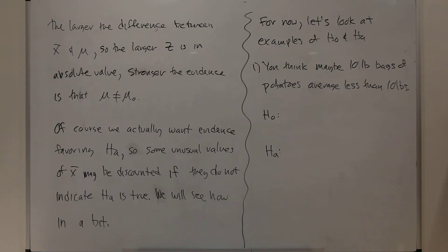Okay, the larger the difference between x-bar and mu is, so the larger z is in absolute value, the stronger the evidence is that the mean is not the hypothesized value.